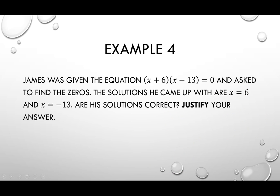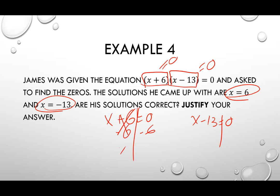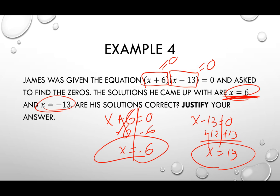Example four: James is given the equation X plus six times X minus 13 equal to zero and asked to find the zeros. His solutions are X equal to six and X equal to negative 13. Are his solutions correct? Let's solve it ourselves. Taking each piece and setting it equal to zero: X plus six equals zero gives X equal to negative six, and X minus 13 equals zero gives X equal to 13. James came up with positive six and negative 13, not negative six and positive 13. So James is wrong.